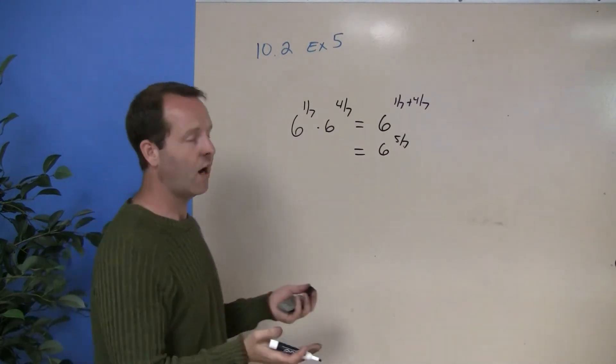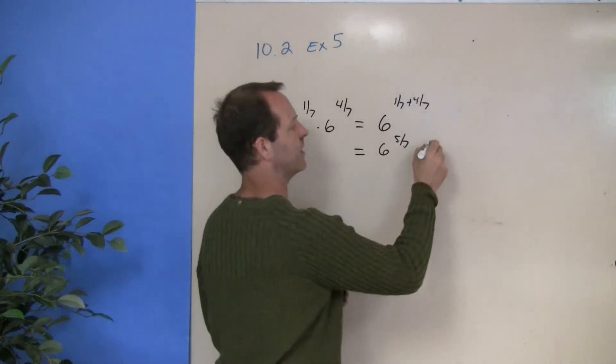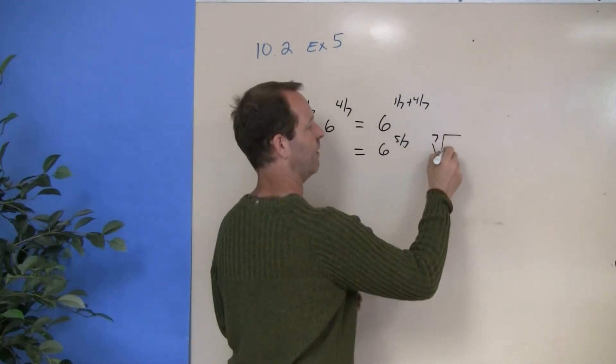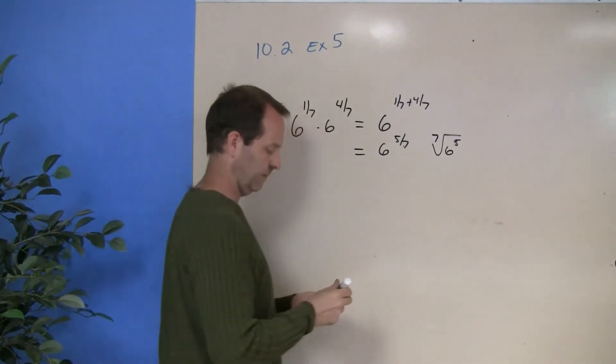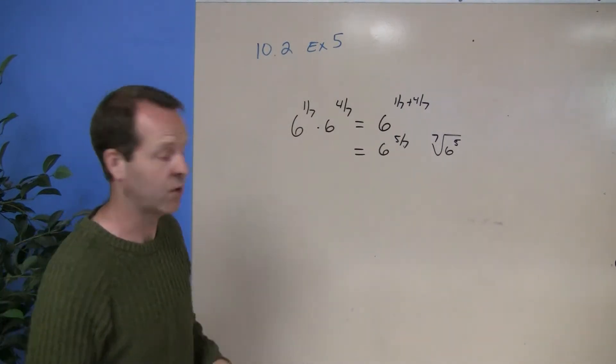And then also, if we want to, we can write it in radical form, which is the 7th root of 6 to the 5th. And again, there may be a reason we'd want to do that, but at least we know that we can do that.